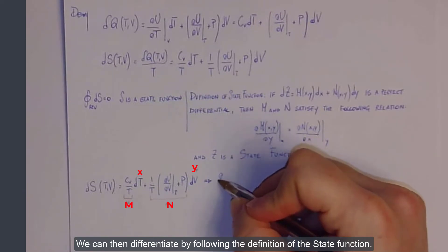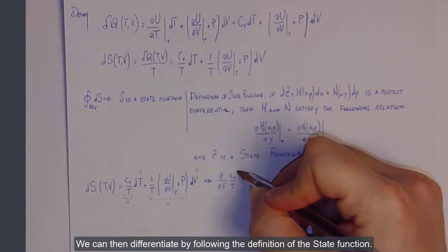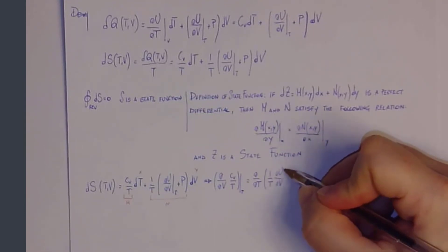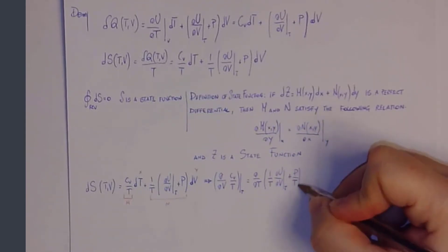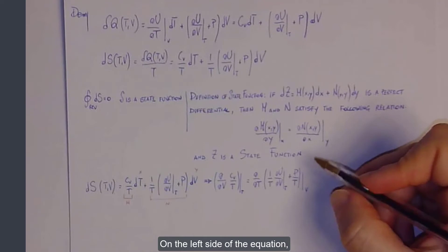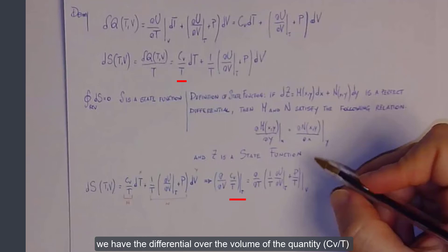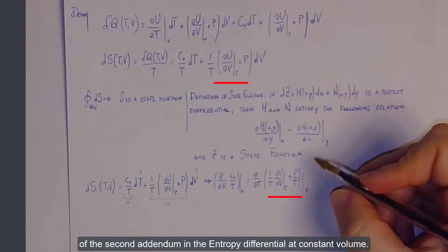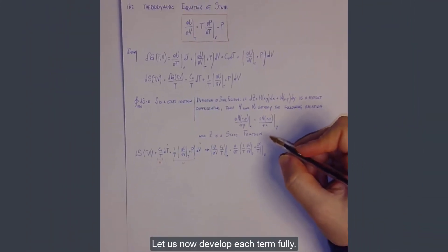We can differentiate by following the definition of state function. On the left side of the equation, we have the differential over the volume of the quantity Cv over T at constant temperature. On the right side of the equation, we have the differential over temperature of the second addendum in the entropy differential at constant volume. Let us now develop each term fully.